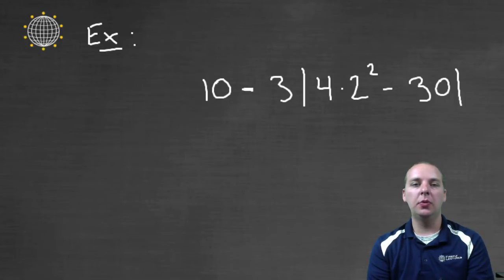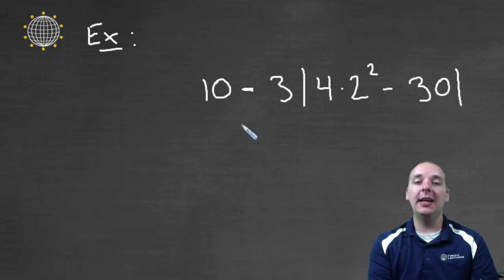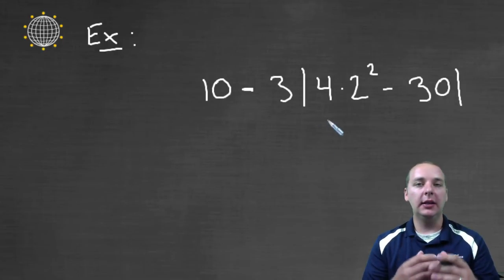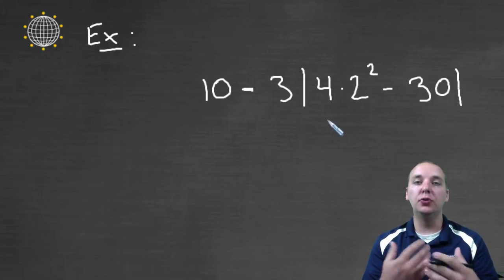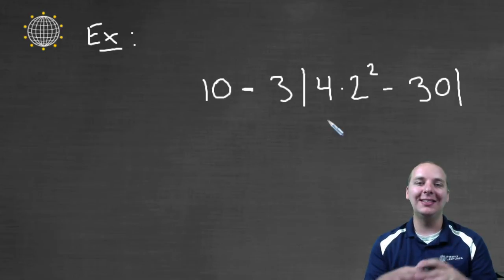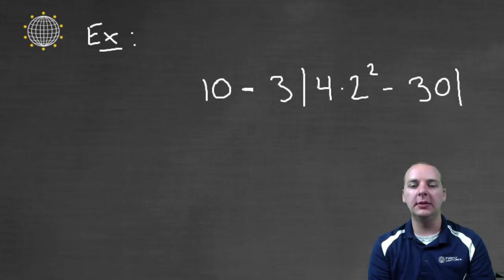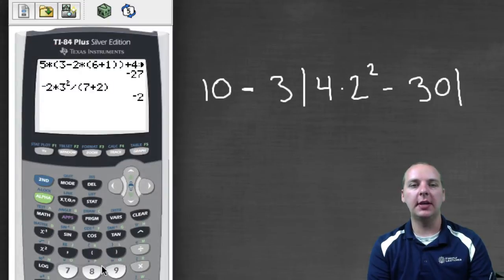Alright and let's do one more. We'll wrap up with this one. It can handle absolute values as well. Absolute values, you treat them like parenthesis as far as grouping goes. You have to do everything inside the absolute values first, just like you would with parenthesis. Okay, so let's type this in.